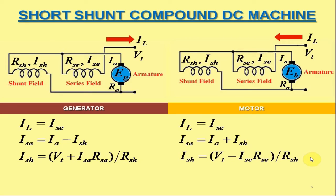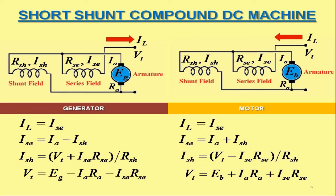In case of short shunt compound DC generator, the terminal voltage VT can be calculated by subtracting the armature voltage drop IA·RA together with the voltage drop in series field winding ISE·RSE from the generated EMF EG. On the other hand, in case of short shunt compound DC motor, the terminal voltage VT can be calculated by adding the armature voltage drop IA·RA together with the voltage drop in series field winding ISE·RSE into the back EMF EB. Keeping in observation the direction of the currents in shunt and series field windings of the short shunt compound DC generator, it is worth noting that the series field strengthens the shunt field — therefore this particular short shunt compound DC generator is said to be cumulative compound.